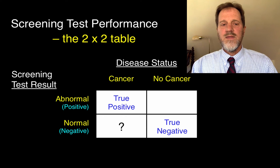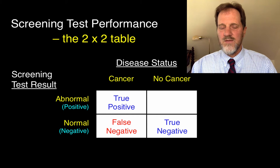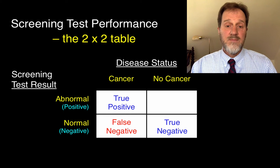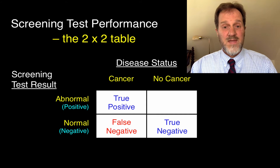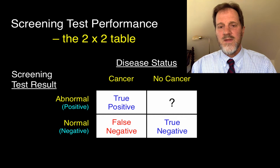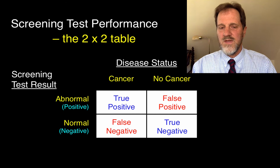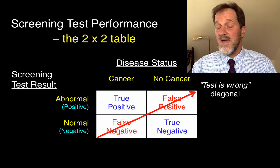A person who has cancer but has a normal or negative test result — that's a false negative test result. It's tempting to blame this on the test, but sometimes the problem's with the cancer — the cancer is growing very quickly and shows up soon after the test. And a person who doesn't have cancer but nonetheless has an abnormal or positive test result — that's a false positive test result. This is the bad diagonal, the test-is-wrong diagonal.